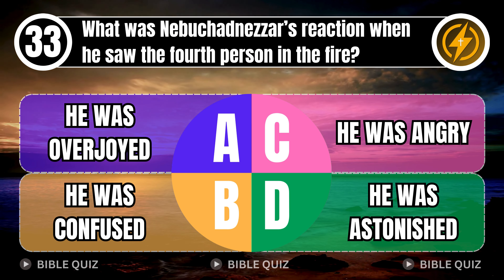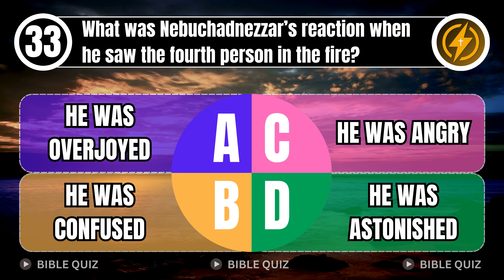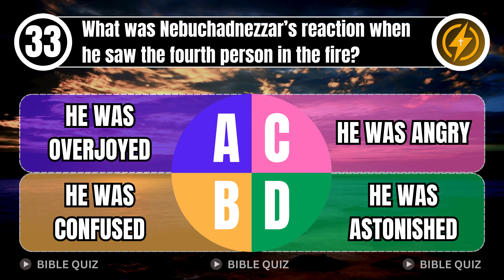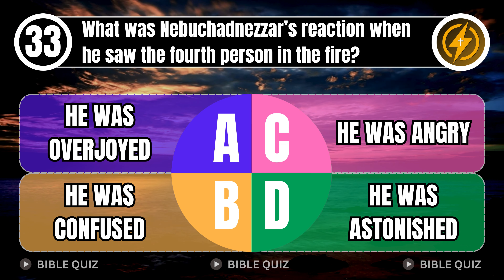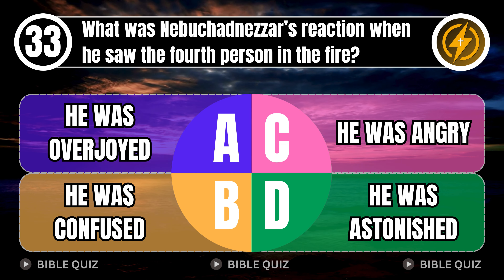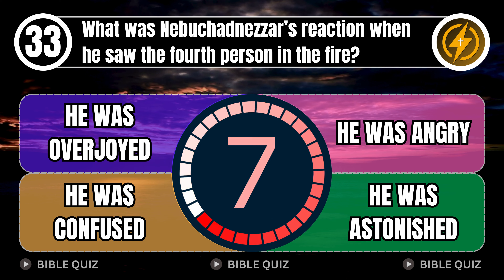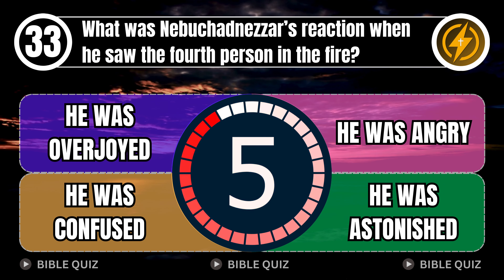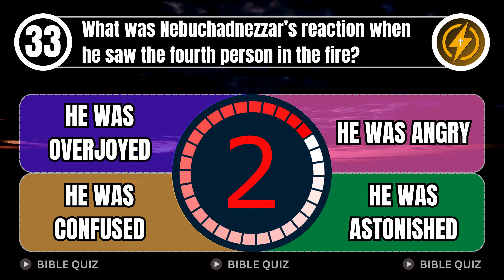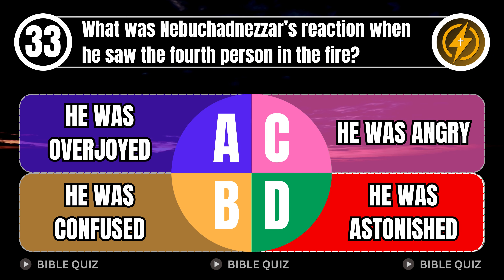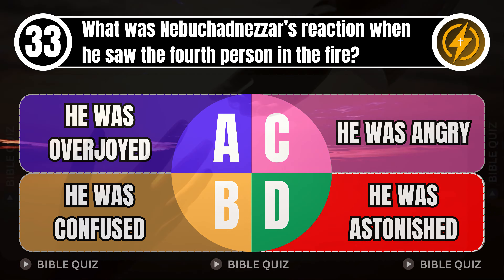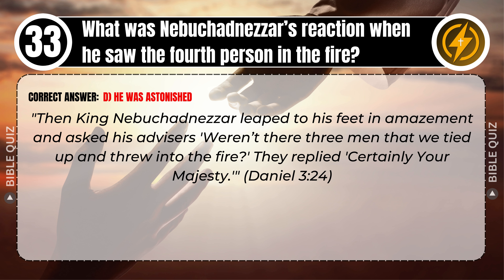Question 33: What was Nebuchadnezzar's reaction when he saw the fourth person in the fire? A. He was overjoyed. B. He was confused. C. He was angry. D. He was astonished. Correct answer: D. He was astonished. Then King Nebuchadnezzar leaped to his feet in amazement and asked his advisors, 'Weren't there three men that we tied up and threw into the fire?' They replied, 'Certainly, Your Majesty.' Daniel 3 verse 24.